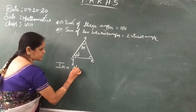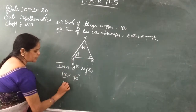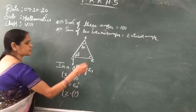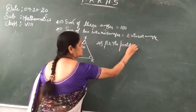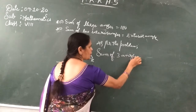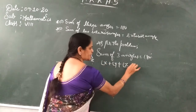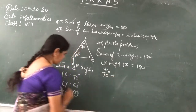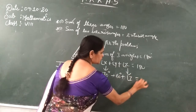In a triangle x, y, z — angle x is equal to 70 degrees, angle y is equal to 60 degrees, and angle z is the question. So you have to find out angle z. As per the problem, the sum of three angles is equal to 180 degrees. So angle x plus angle y plus angle z is equal to 180. Angle x is 70 degrees, angle y is 60 degrees, and angle z is unknown.